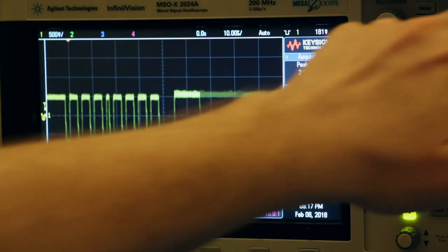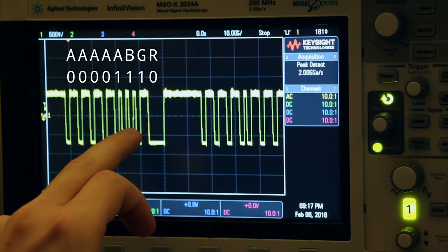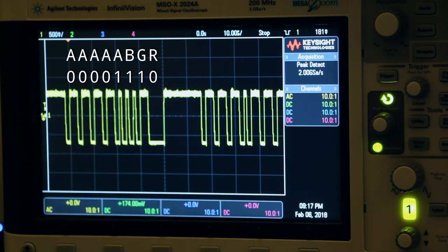This is cyan. There we go. 1, 1, 0. Oh, sorry. 1, 1, 1, 0. And what's cyan made of? It's made of green and blue. And that matches up with our expectations.